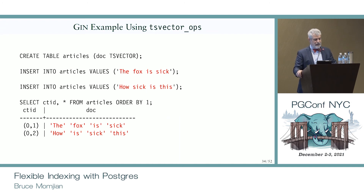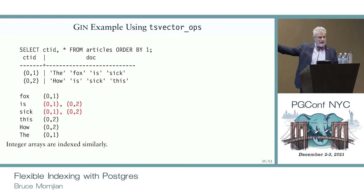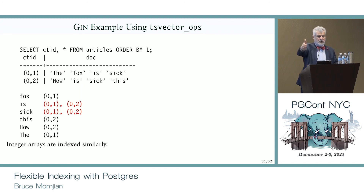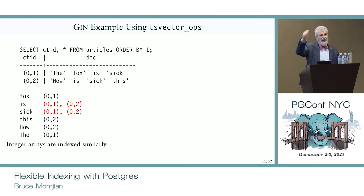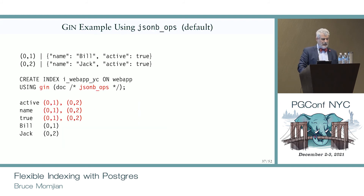GIN — here's an example with full-text search. I have two text strings: 'The fox is sick' and 'How sick is this?' We store it in full-text search by breaking it into tokens — called lexemes. Notice that 'is' and 'sick' appear in both strings. So while 'fox', 'this', 'how', and 'the' have one match each, 'is' and 'sick' have two. In the GIN index, we only store 'is' once and 'sick' once, with two row pointers each. If we were using Btree, we'd have to store 'is' for every match. With GIN, we don't.